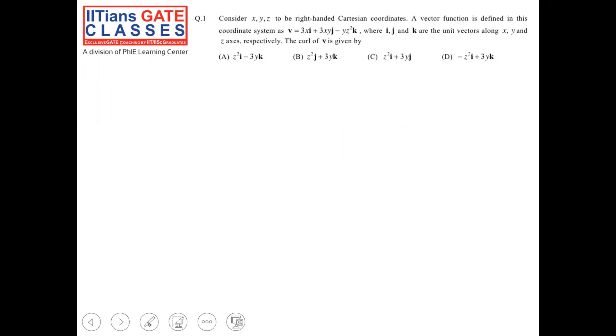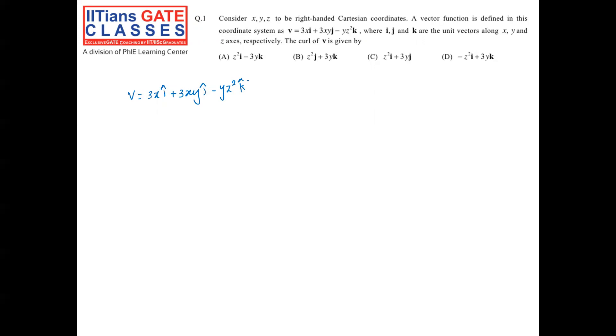Starting with the first question, this question is from vector calculus. Consider XYZ to be a right-handed Cartesian coordinate system. A vector function is defined as V equals 3x i plus 3xy j minus yz² k, where i, j, k are the unit vectors along x, y, and z directions respectively. They are asking us for the curl of V.